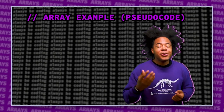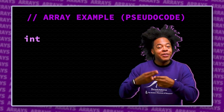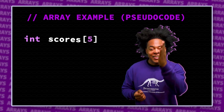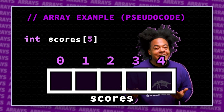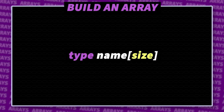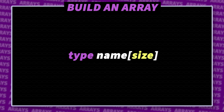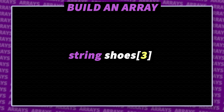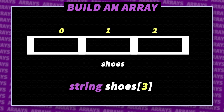Declaring an array: give it a data type, a name, and then a size. The size divides the length of the array, and each section has an address for its index or place. Declaring an array is similar to declaring a variable — you specify the type, then give it a name — but for an array, you also include the desired size. For example, let's make an array of type string named 'shoes' with a size of 3. Now we have contiguous memory with enough space for 3 strings, and at the moment this array is uninitialized, meaning we haven't put any data into it just yet.